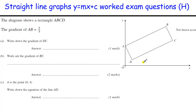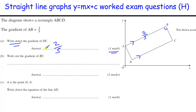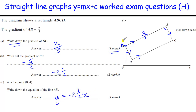The gradient of AB is 2 fifths. Write down the gradient of DC: because it's a rectangle, these sides are parallel, so that's also 2 fifths. Work out the gradient of BC: BC is at right angles to AB, so it's the negative reciprocal of 2 fifths. Turning it upside down gives 5 over 2, which we could write as 2 and a half. A is the point (0, 4), so it's at 4 on the y-axis. Write down the equation of line AD: AD is parallel to BC, so it has a gradient of minus 5 over 2 x, and it goes through 4.